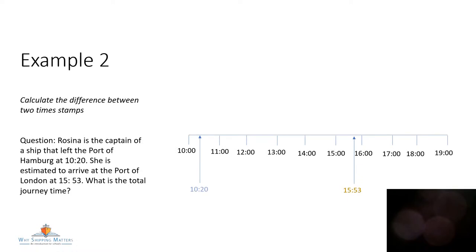Here's our second question. Rosina is the captain of a ship that left the port of Hamburg at 10:20. She's estimated to arrive in the port of London at 15:53. What's the total journey time? If you've got a piece of paper and a pen, why don't you write down what you think the answer is? Shall we go through it together? It's 40 minutes from 10:20 till 11am, then an hour more.